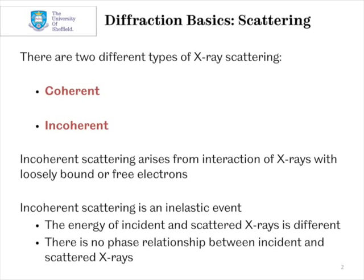Incoherent scattering arises from the interaction of X-rays with loosely bound or free electrons. It's an inelastic event, meaning the energy of incident and scattered X-rays is different, and there's no phase relationship between the two.